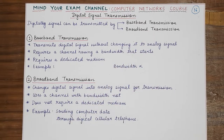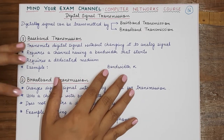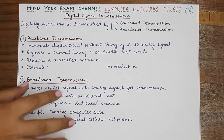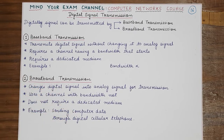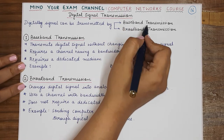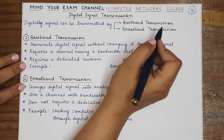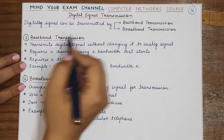In the previous video we learned that information in the form of signals can be transmitted either in the form of analog signals or in the form of digital signals. Now digital signal transmission can be done either using baseband transmission or broadband transmission. Let's understand what each of these are.